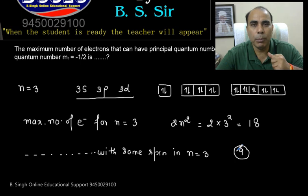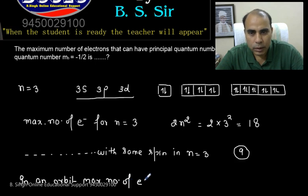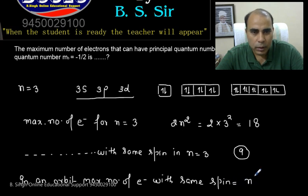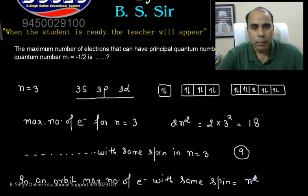If you see it in generalized form, you can say that in an orbit, maximum number of electrons with same spin is equal to n square. Okay? In any particular orbit, maximum number of electrons with same spin is equal to n square.